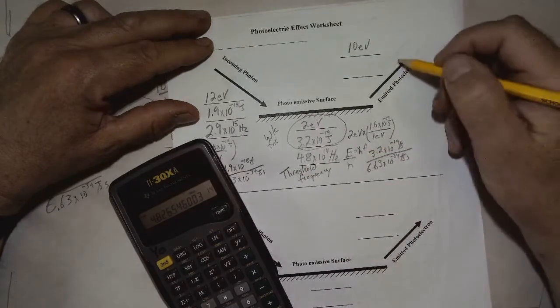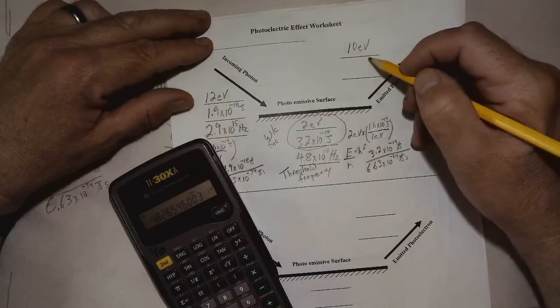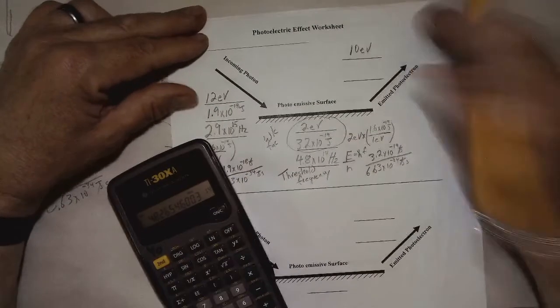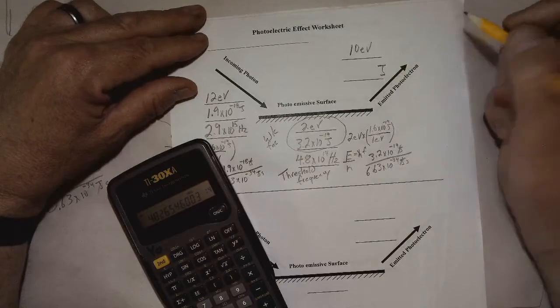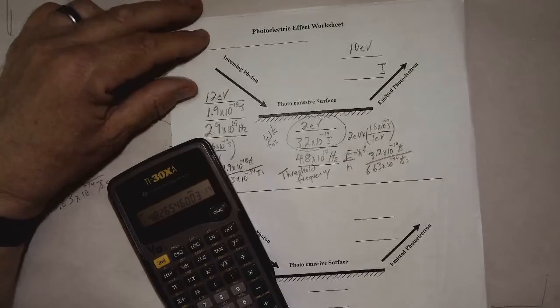Great. And the emitted photoelectron, the only thing we need to do with that is convert that into joules because there would be no frequency with that.